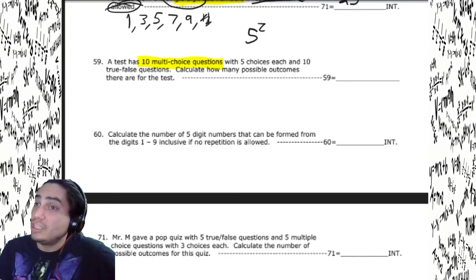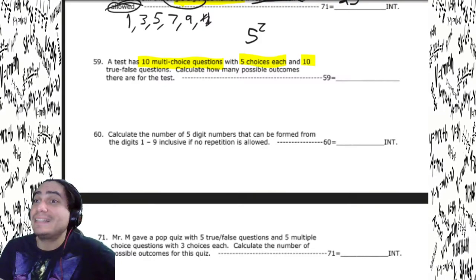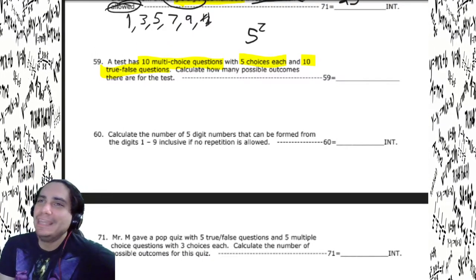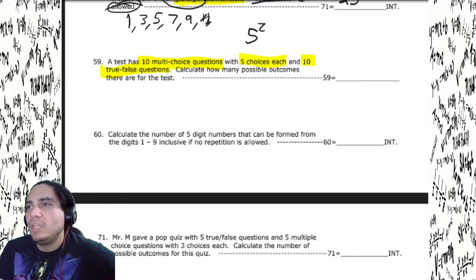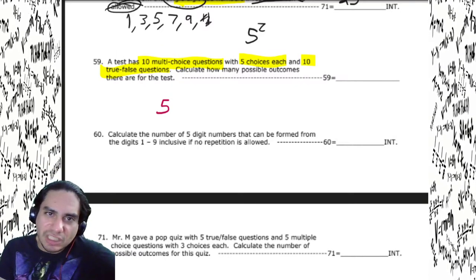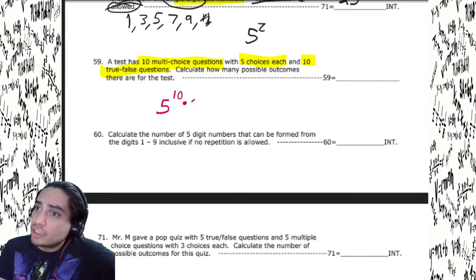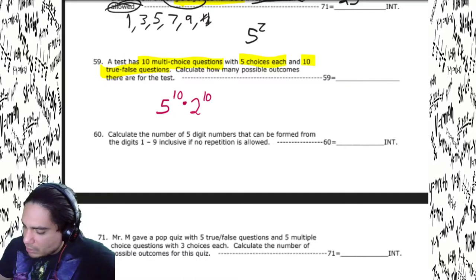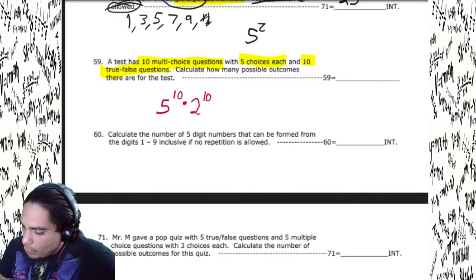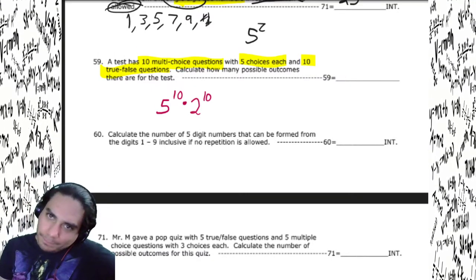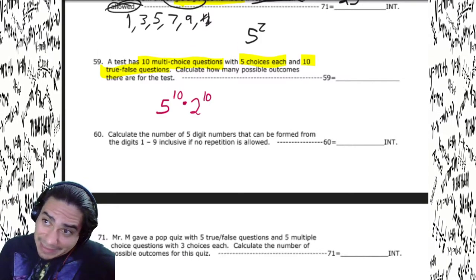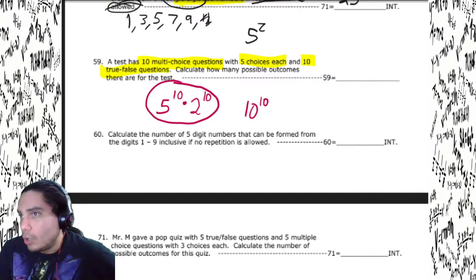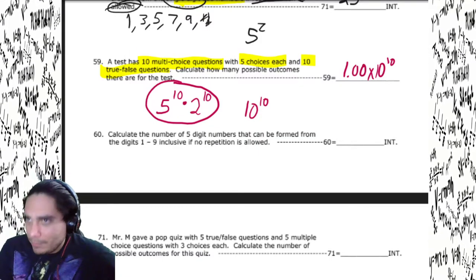We've got a test with ten multiple choice questions — five choices each — and ten true or false questions. A true or false question has two choices. So we've got five choices for the ten multiple choice questions: 5¹⁰, and we multiply that by two choices for the true or false: 2¹⁰. That's 5 enter 10 y^x times 2 enter 10 y^x. We end up with 1.00 times 10 to the 10th — and some of you might notice this is the same as 10 to the 10th, using laws of exponents.